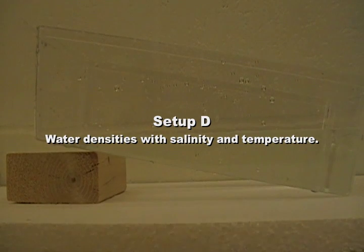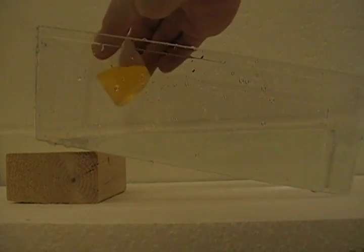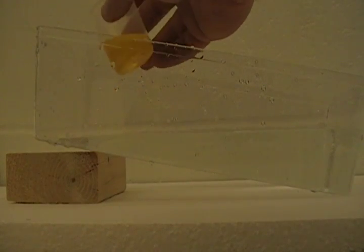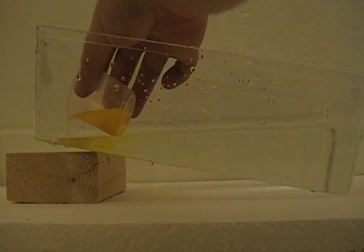Next, carefully and slowly pour 25 milliliters of room temperature salt water into the raised end of the box. As you will see, the salt water, more dense than the surrounding fresh water, will sink to the bottom of the tub.